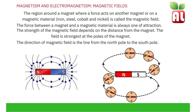The force between a magnet and a magnetic material is always one of attraction. This is the case in a permanent magnet. A permanent magnet may be made up of cobalt or nickel. There is always a force of attraction or repulsion in a permanent magnet. This is different to an induced magnet.